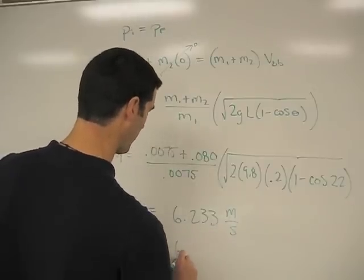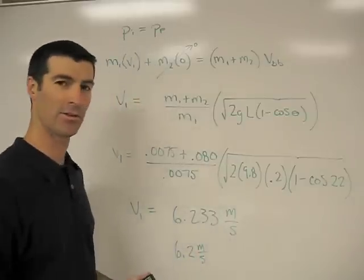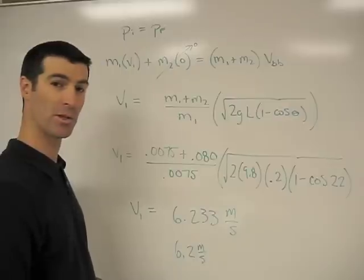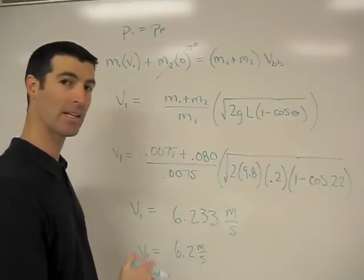I'm going to say it's really, I feel confident saying 6.2, and that is still pushing it a little bit. But we'll go with 6.2 meters per second for our velocity as calculated by the ballistic pendulum.